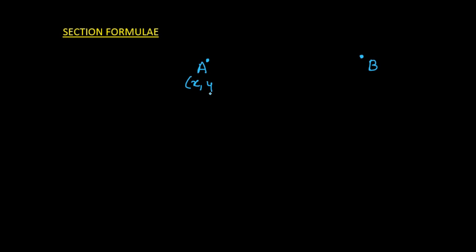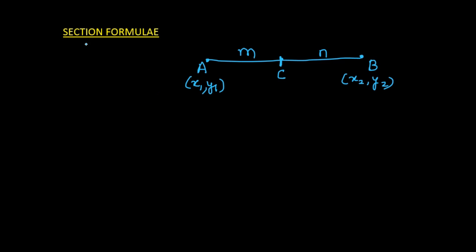Let us take two points A and B. The coordinates of point A are x1 and y1, and the coordinates of point B are x2 and y2. The line joining A and B is divided by a point C in the ratio m is to n, meaning the ratio of AC to CB is m is to n.